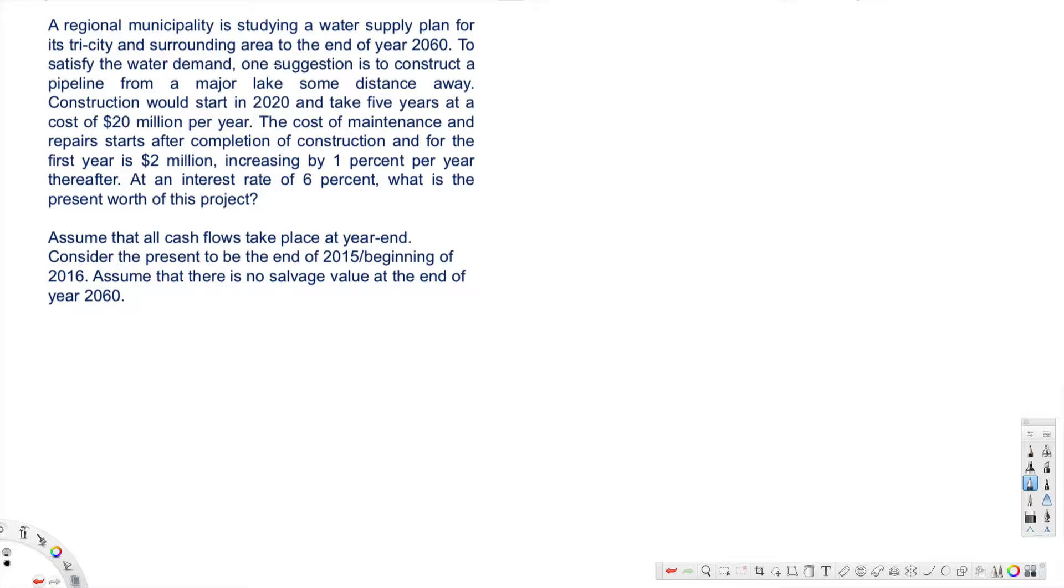To satisfy the water demand, one suggestion is to construct a pipeline from a major lake some distance away. Construction would start in 2020 and take five years at a cost of $20 million per year. The cost of maintenance and repair starts after completion of construction, and for the first year is $2 million, increasing by 1% per year thereafter.